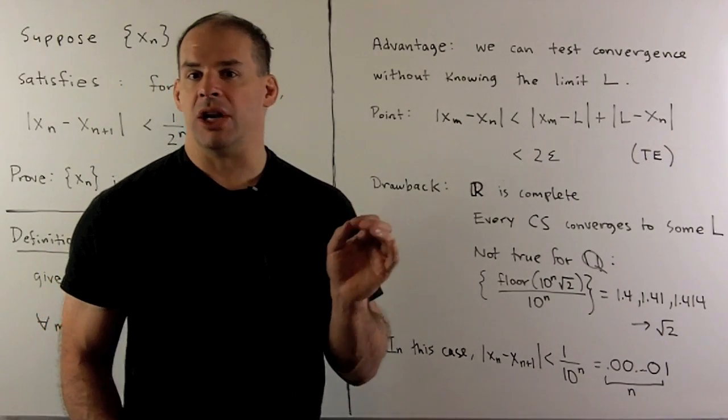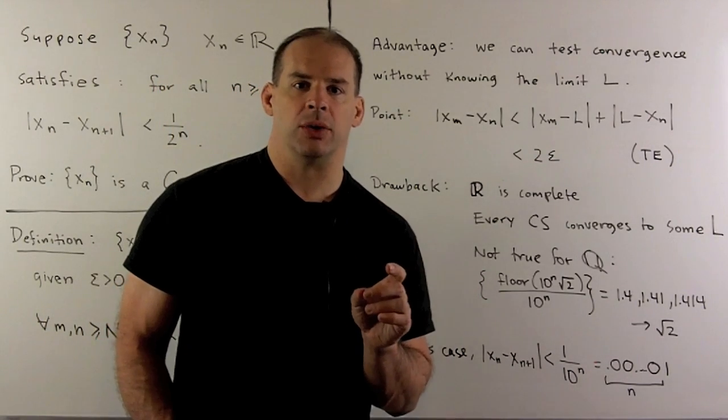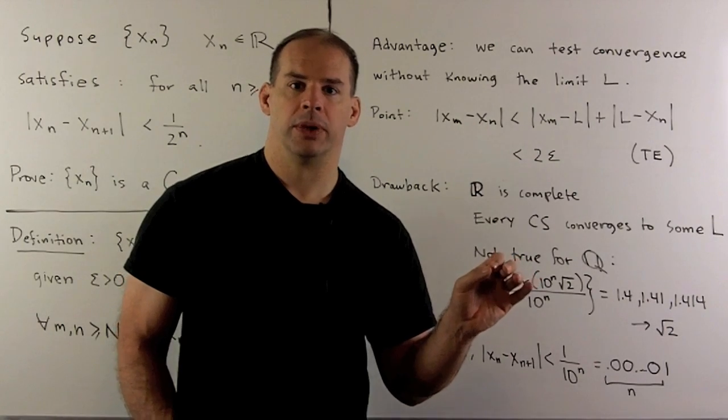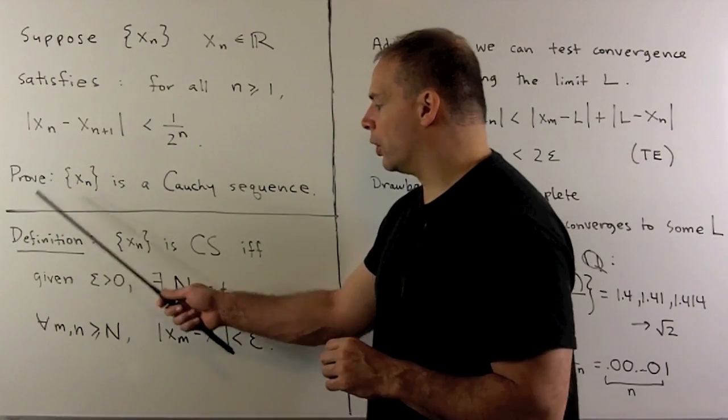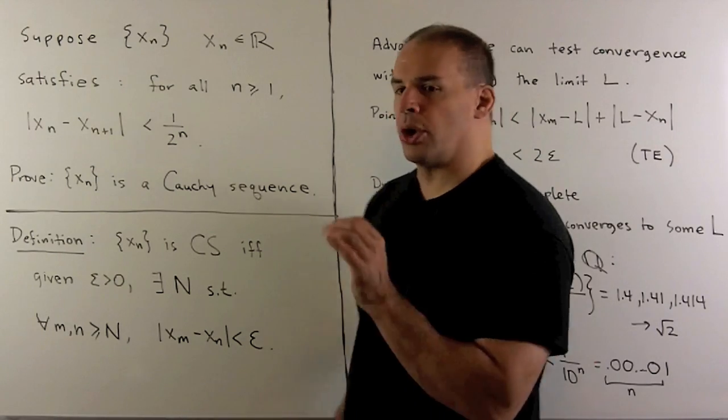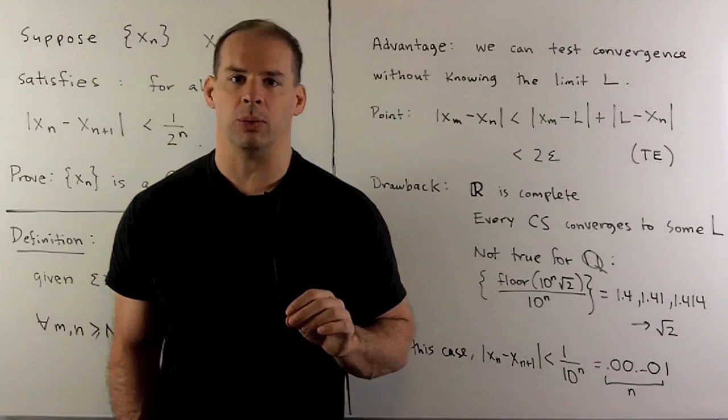The advantage of using Cauchy sequences - if we're over the real numbers, every Cauchy sequence is going to converge to a real number L. We note, in our definition of Cauchy sequence, we make no reference to the limit L. So Cauchy sequences give us a method for testing convergence and we have no idea what the limit would be.